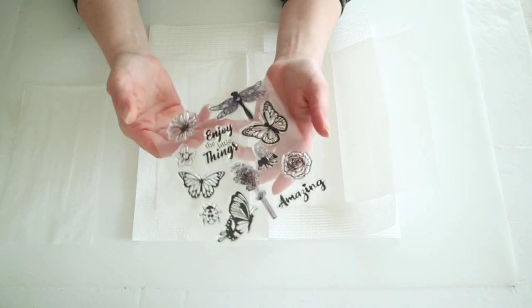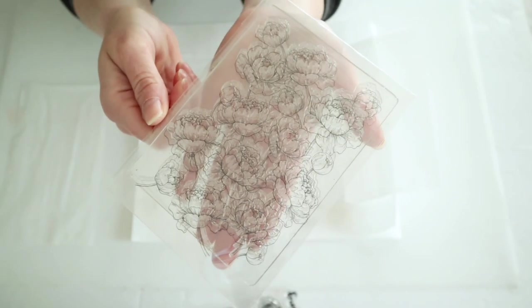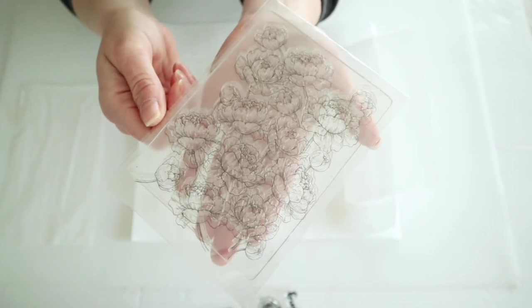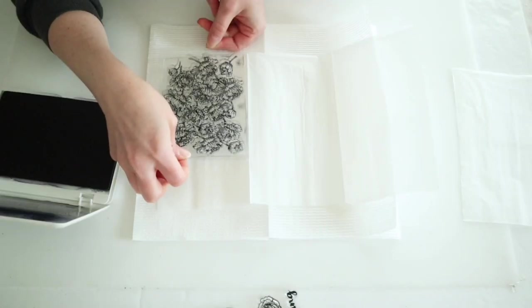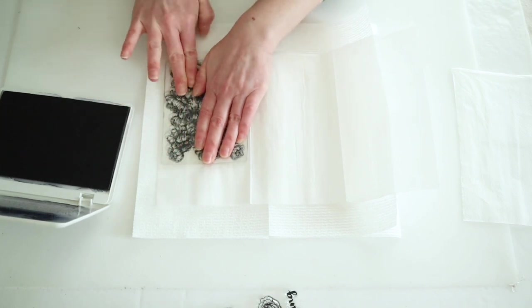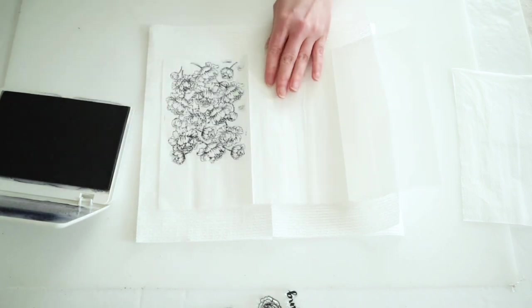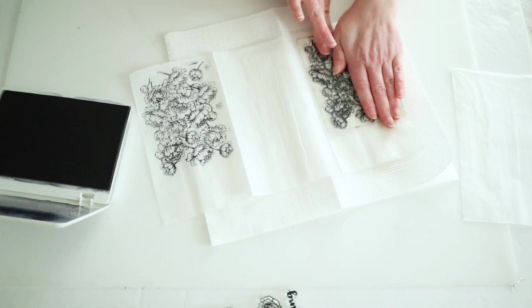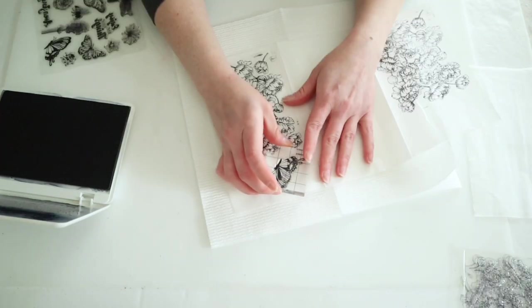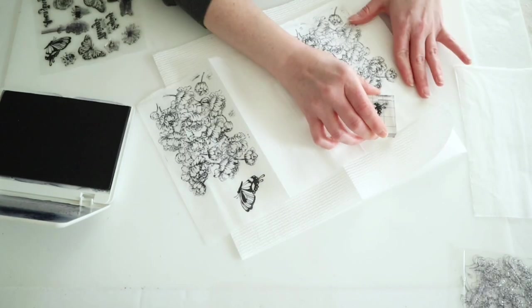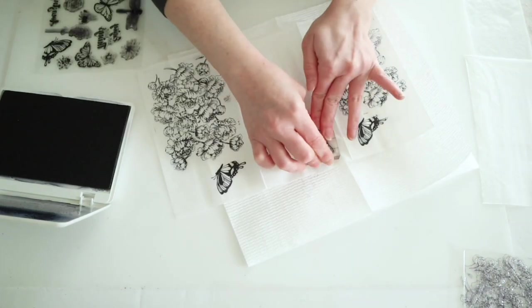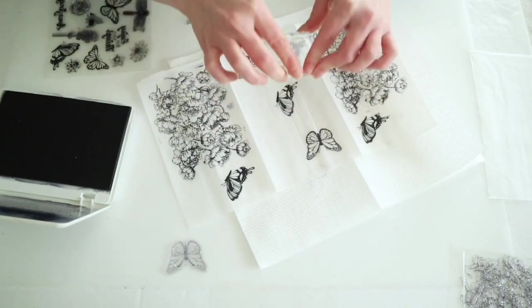I'm using these Dollar Tree stamps again and also this pretty little floral stamp from Amazon. I'm stamping these flowers on two of these sheets, and for the other two sheets I'm just using the butterfly stamps from Dollar Tree. For the two other sections, I did some more butterflies.